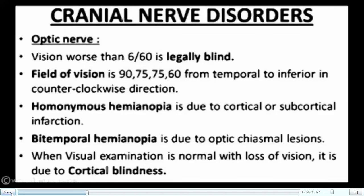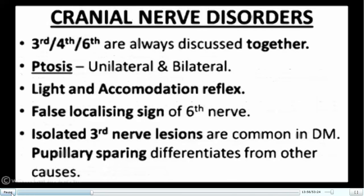The optic nerve has various facets: color vision, normal vision, visual fields, retinal examination, and pupillary reflexes. Vision worse than 6/60 is the definition of legal blindness. The visual field formula is 90-75-75-60 from temporal to inferior in counterclockwise direction. Homonymous hemianopia is always due to cortical or subcortical infarction; bitemporal hemianopia is due to optic chiasmal lesions. Normal visual examination with loss of vision suggests cortical blindness or occipital cortex infarction.